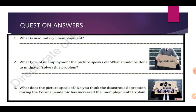Now it is time for question answers. Students, the first question is: what is involuntary unemployment — unachik berojgaari? Involuntary means it is not your wish to be unemployed, to sit at home, to do no work, to have no income at home — would anyone ever want that? Absolutely not. So that is what we call involuntary unemployment: you don't want to be unemployed but you still are. The second question: what type of unemployment does the picture speak of, and what should be done to mitigate — that is, solve — this problem? A picture is given and you have to tell which type of unemployment it refers to and give your suggestions to solve it.